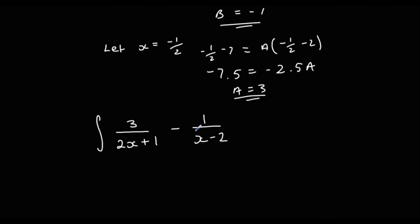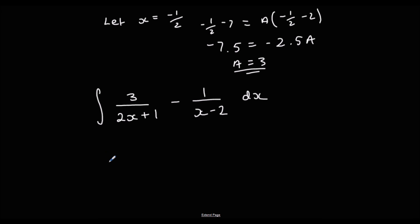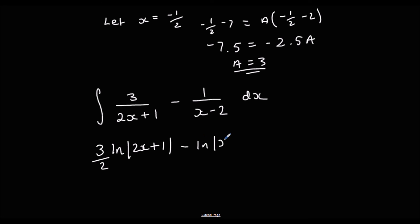We've rewritten the question in a form we can integrate. So we integrate: 3 ln(2x plus 1) divided by the bracket differentiated, which is 2, giving (3/2) ln(2x plus 1), minus ln(x minus 2), the bracket differentiated being 1, plus c.